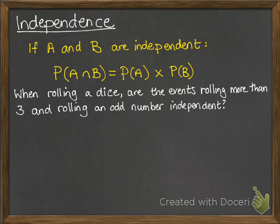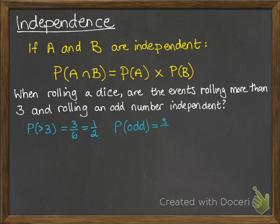So, mathematically we want to work that out. The probability of getting more than a 3 — there are three numbers that are more than a 3: a 4, a 5, or a 6 — so the probability of getting one of those is 3 out of 6, or a half. Then the probability of getting an odd number is also 3 out of 6 — we can have a 1, a 3, or a 5 — so that is also a half.